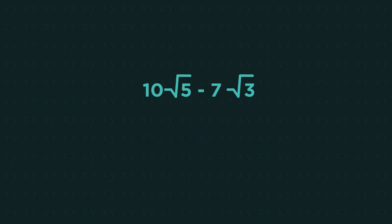So what's wrong here? Can we subtract these? Nope! Square root 5 and square root 3 are different. Just like 10A take away 7B can't simplify, nor can this.